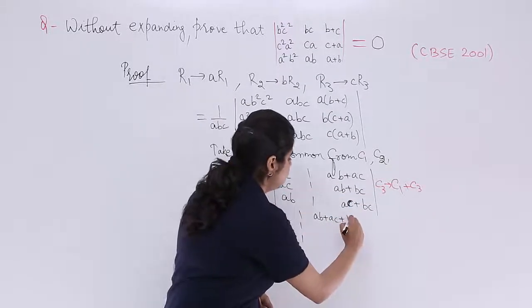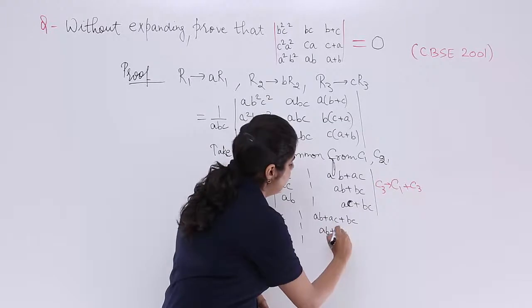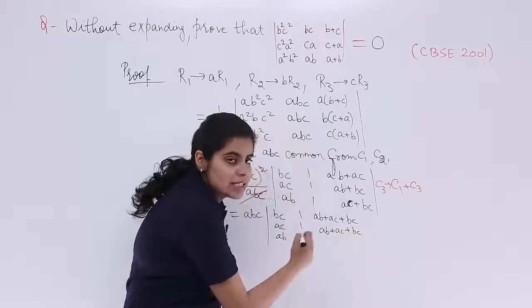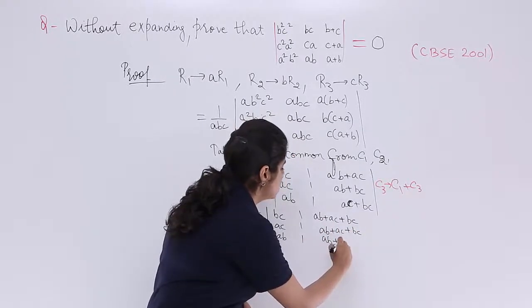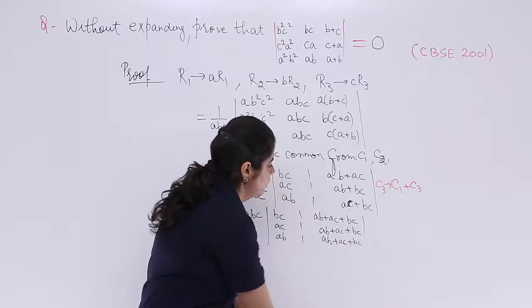Where is C1? It is BC. Similarly, AB plus AC plus BC. Similarly, AB plus AC plus BC. Right?